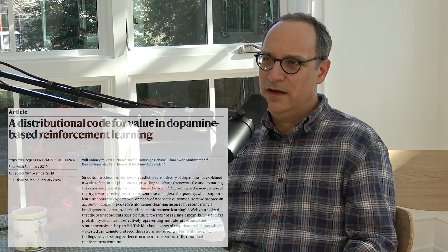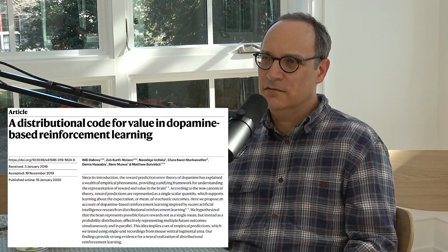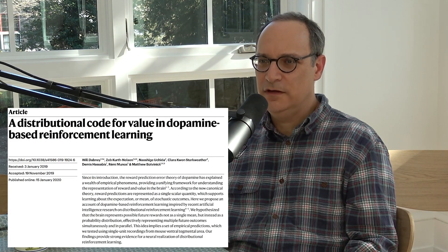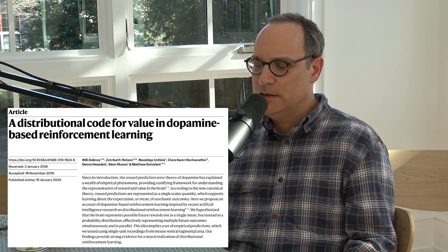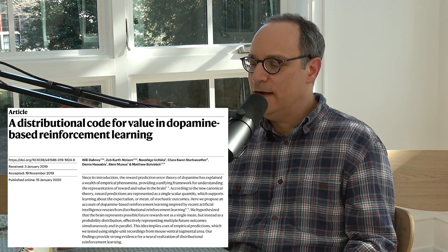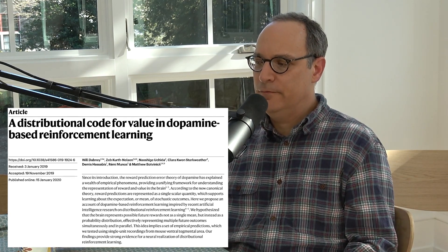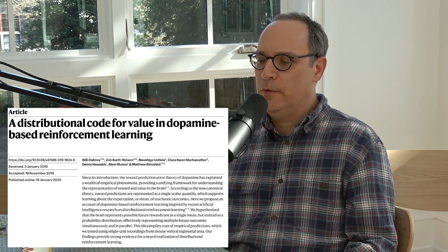We have to talk about dopamine — it's a cool paper. I was going to give you a quick summary. The title is 'A Distributional Code for Value in Dopamine-Based Reinforcement Learning.' This is a project that grew out of pure AI research.